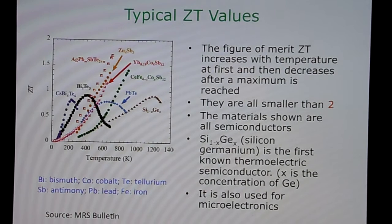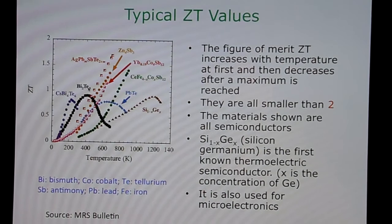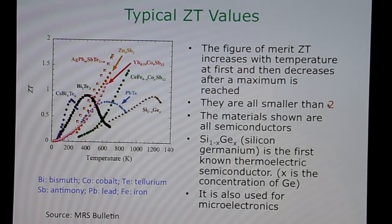The other very important trend to note is that the maximum ZT value for all these thermoelectric semiconductors lies between 1 and 2. In fact, all of them have a ZT value smaller than 2. It is important to notice that at the present time, there are very few semiconductors with a ZT value near to 2.